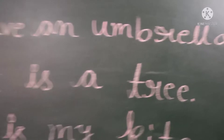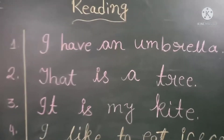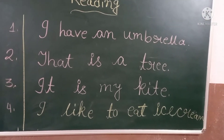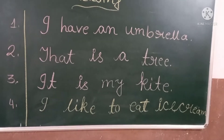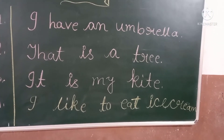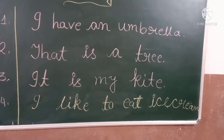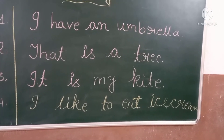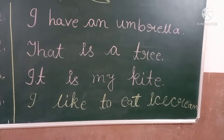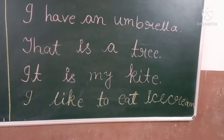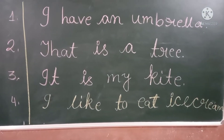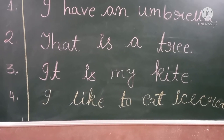So number one: I have an umbrella. Number two: that is a tree. 'That is a tree' means the tree is far from me, so that's why I have written 'that is a tree.'